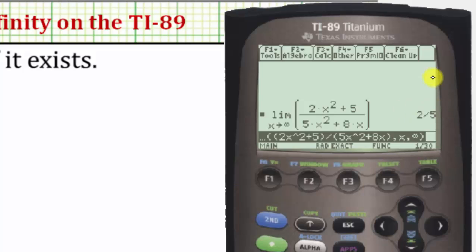The limit is equal to 2 fifths. We are in exact mode, which we can see here. If we did want the decimal for 2 fifths, we can press diamond enter. So the limit is equal to 2 fifths, or 0.4.